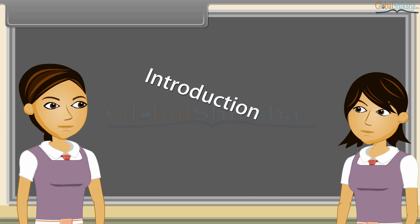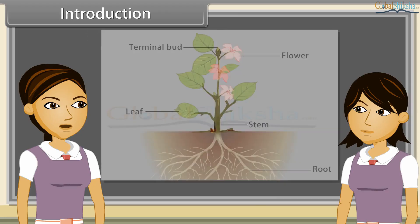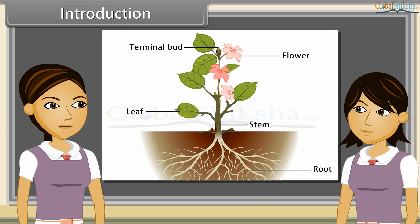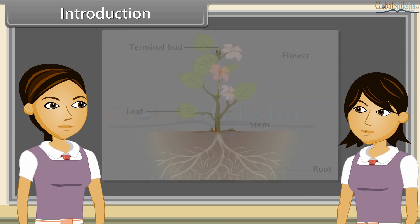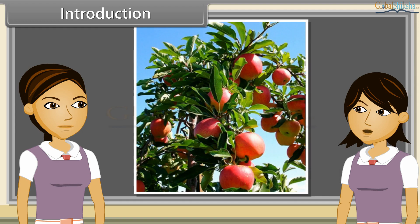When we observe a plant, we see that every plant has roots, stem and leaves. Plants also have flowers and fruits. We have already discussed characteristics, types, modifications and functions of roots and stems. Now we will study the leaf.